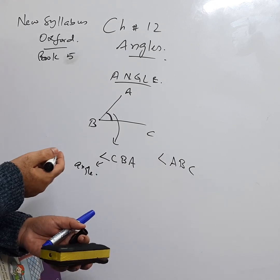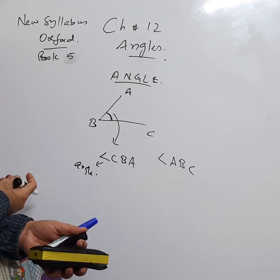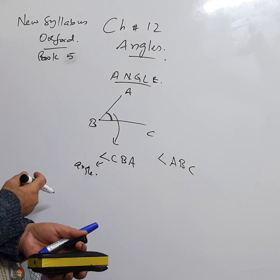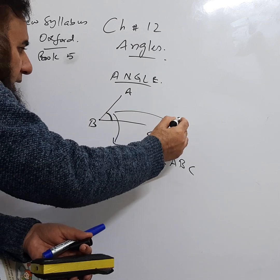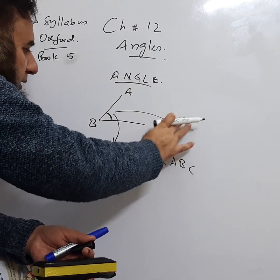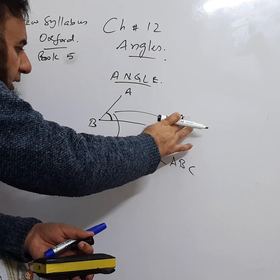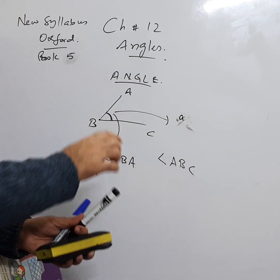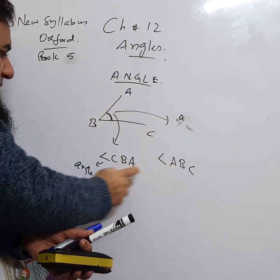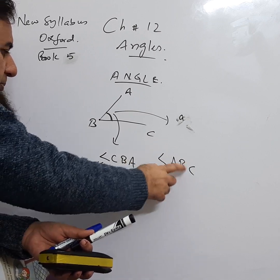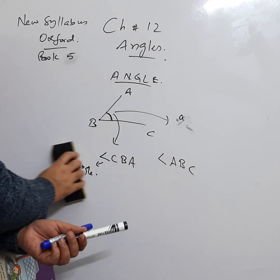Otherwise, we can also use any other letter as a name — we can say this is angle X, or angle A. We can give any name to the angle. But if we use the three-letter method like ABC, then the vertex must always be in the middle. This is how to name the angle.